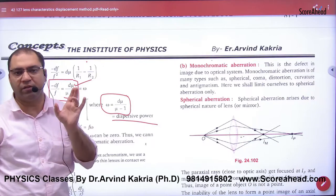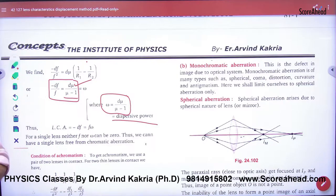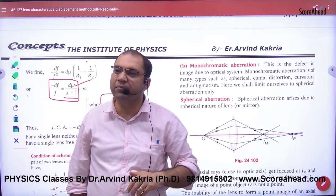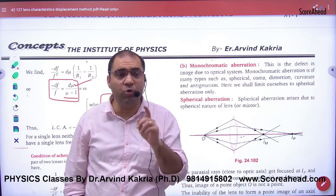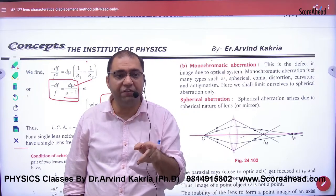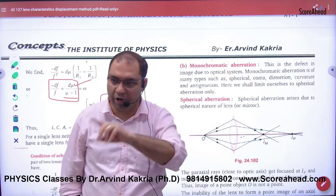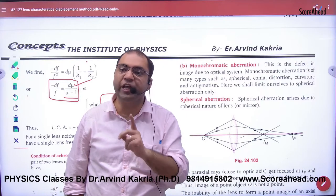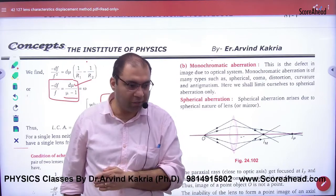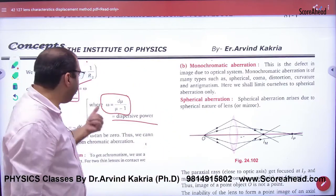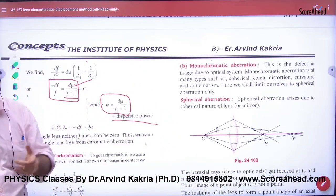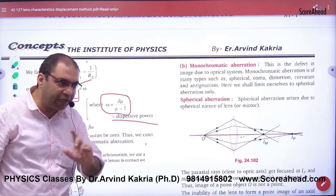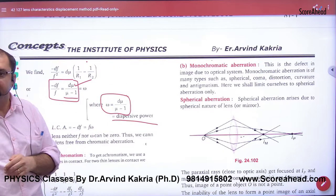What is dμ? It means different colors have different refractive indices. dμ means difference of refractive index between violet and red. The midpoint color is yellow. μ_mean is the refractive index for yellow. So when numerical values are given, dμ means difference of refractive index at the corners, and μ_mean is the refractive index for yellow.